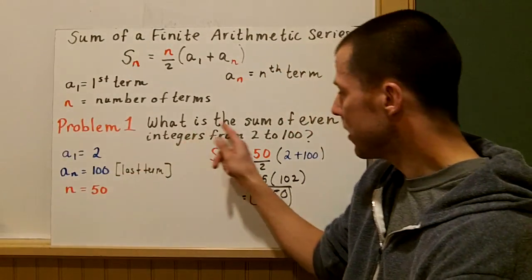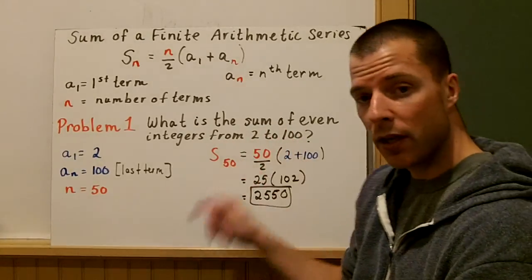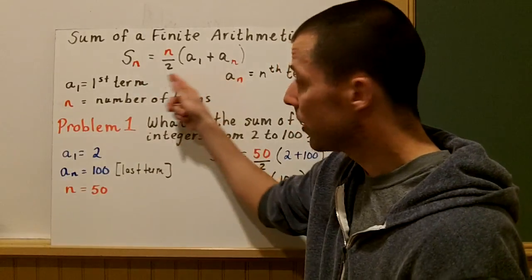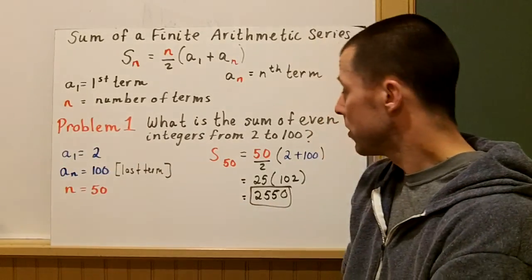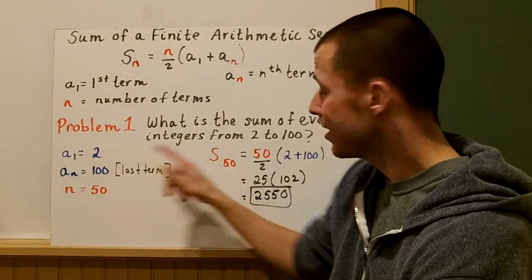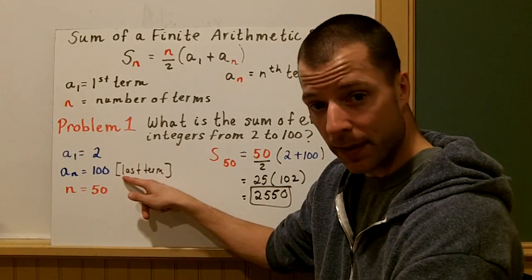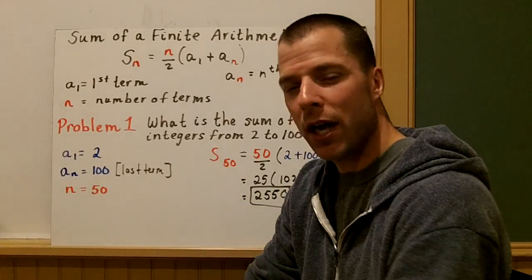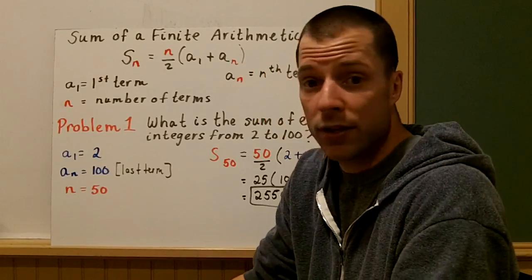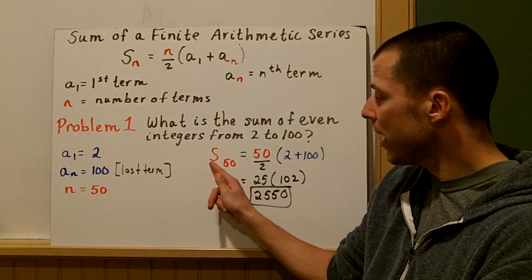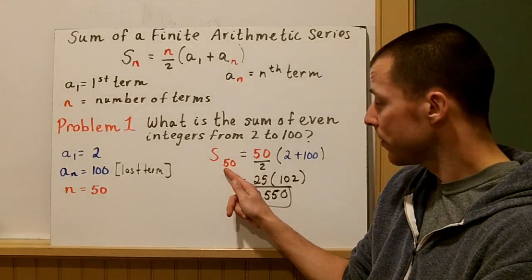So problem number one, what is the sum of even integers from 2 to 100? We're going to use our rule and substitute what we know. We're looking for the sum, S_n. a_1, that's 2, our first term. a_n equals 100, the last term. So now you have to think, how many numbers are between 2 and 100 that are even? The answer is there's 50. So we're looking for S_50, the sum of the 50 even integers.